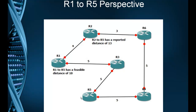That does not mean R1 will never use that path. If this link goes down and R1 no longer has a path to R5, R1 will send queries out saying it doesn't have a path to R5. R2 would respond saying it has a path with a distance of 13. At that point R1 makes a decision — it either can't get there or it can get there through a distance of 13, so it will take that path. Just because a route doesn't show up as a feasible successor does not mean your router won't use it. It just means your router won't list it as an immediate backup path.